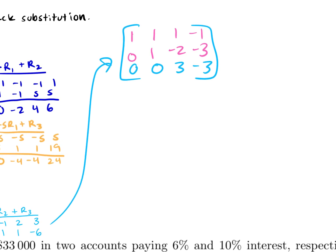One more step before we get that diagonal of ones and zeros. I need to get the three to be a one, so I multiply by one-third (or divide by three).